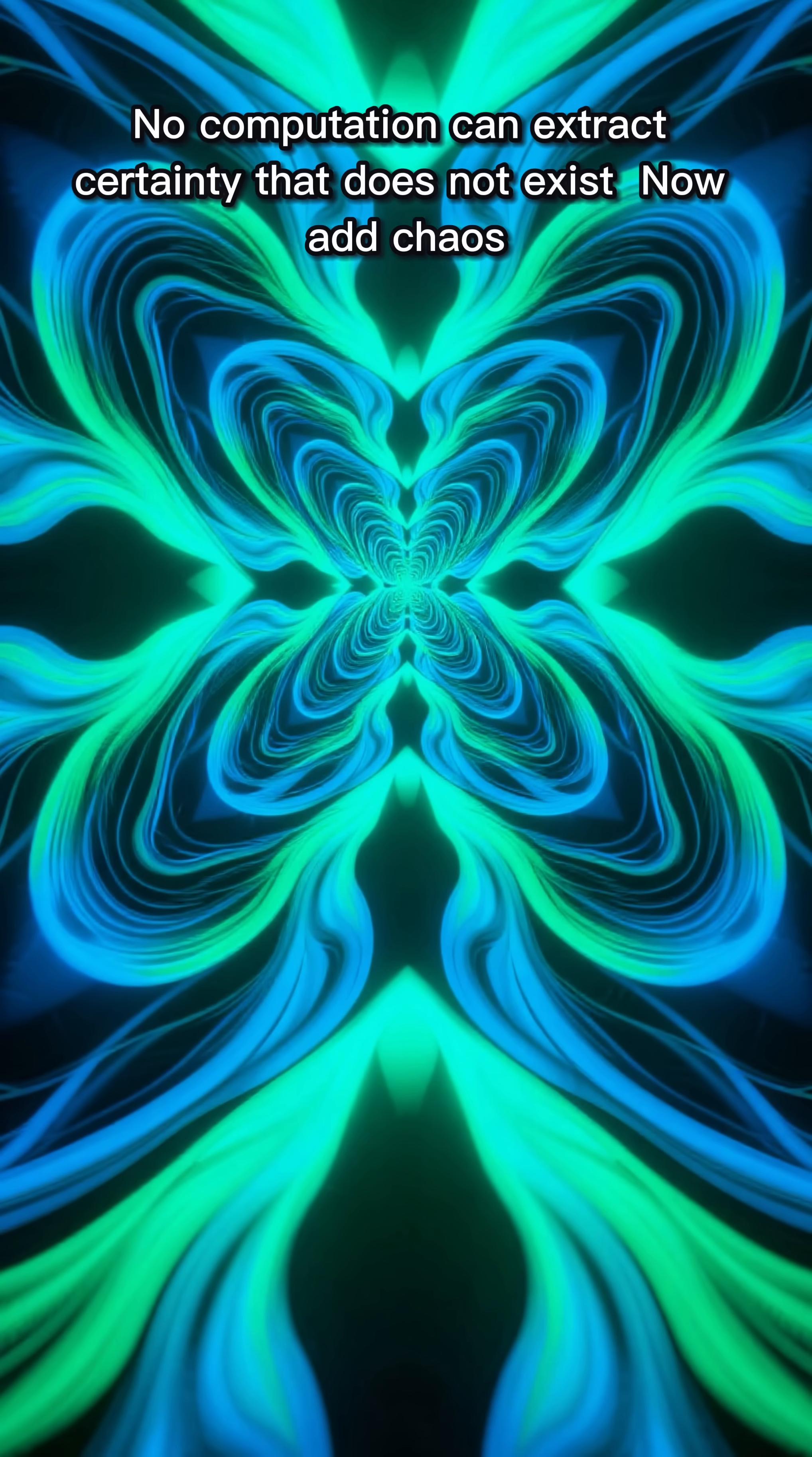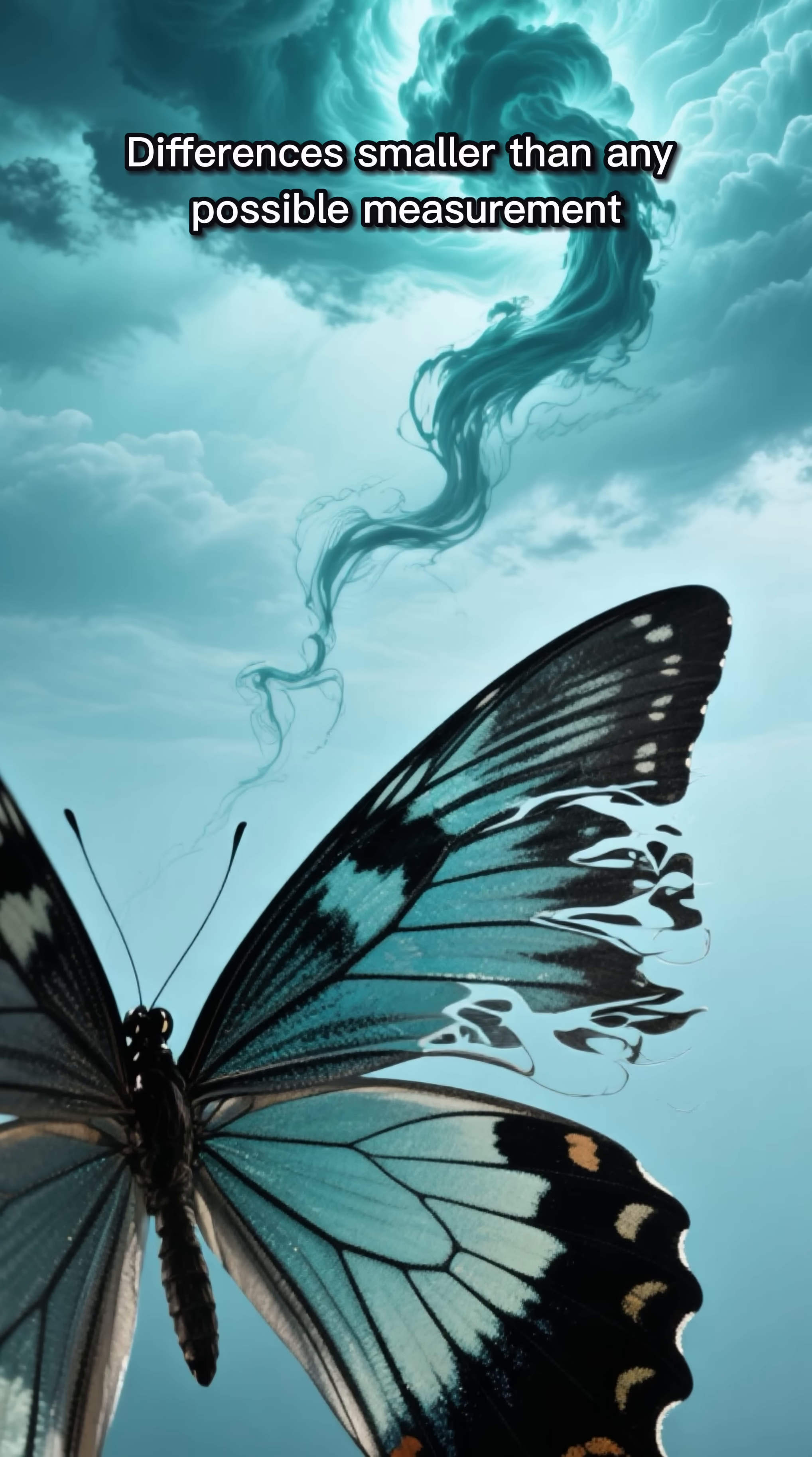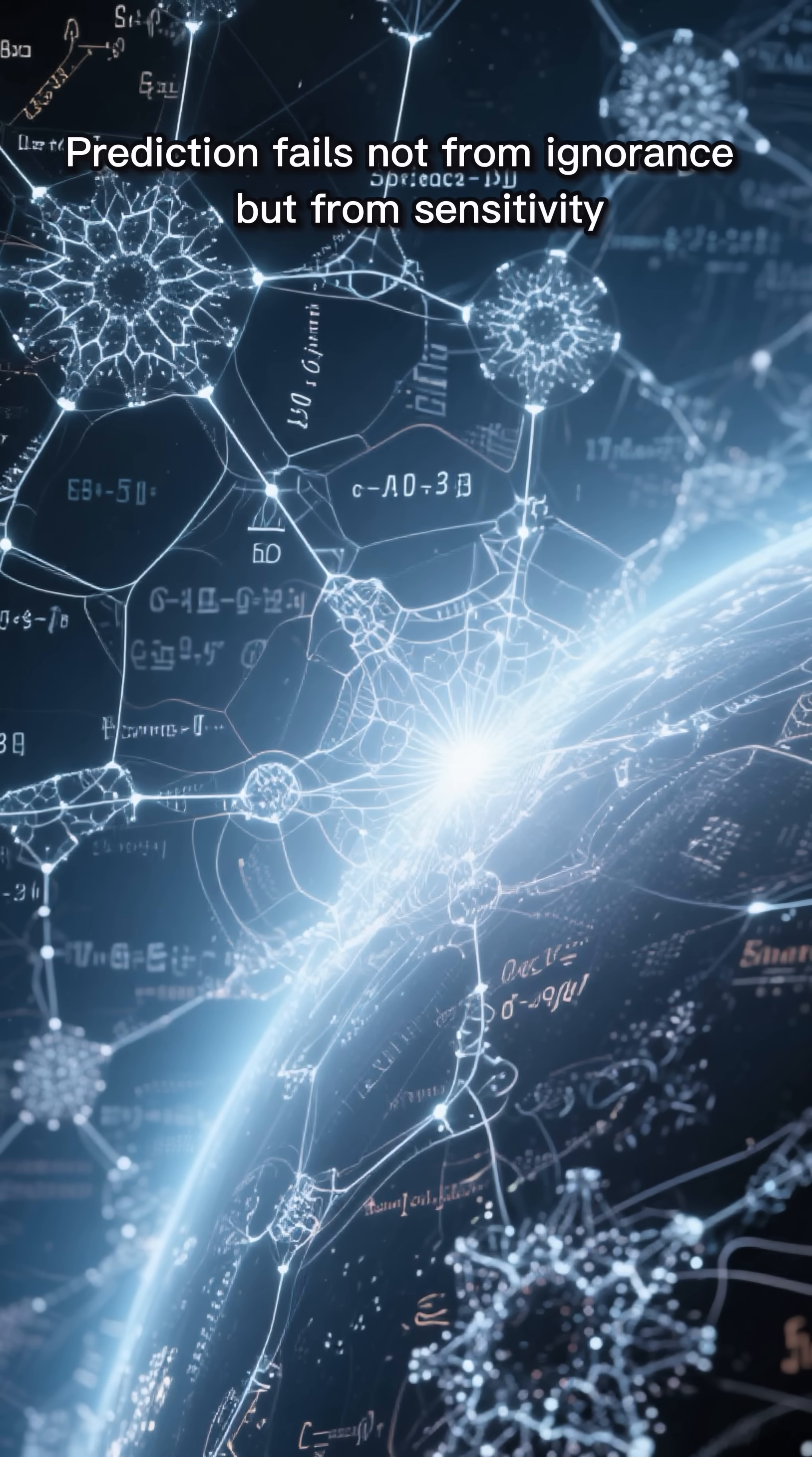Now add chaos. Even classical systems governed by exact equations amplify microscopic uncertainties. Differences smaller than any possible measurement explode into macroscopic outcomes. Prediction fails not from ignorance, but from sensitivity.